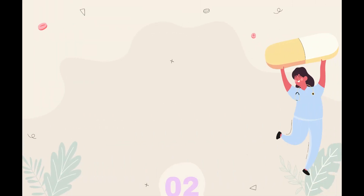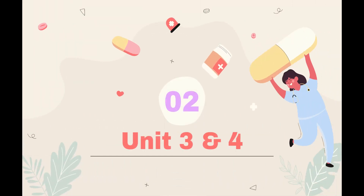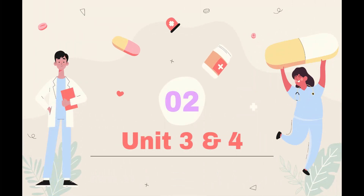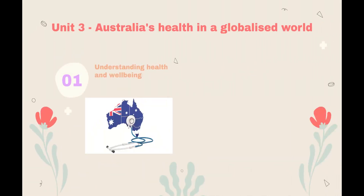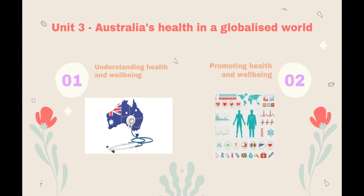Then we're going to look into Units 3 and 4. Unit 3 looks at understanding health and well-being in Australia, again drawing on those five dimensions of health and well-being and how that's important. Then we look at promoting health and well-being and how it's promoted in Australia and through different countries.